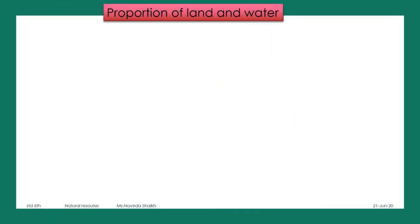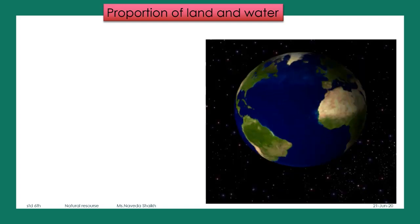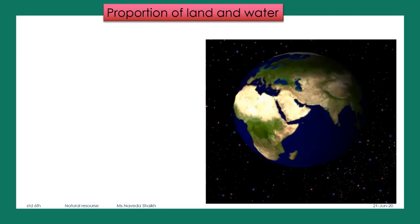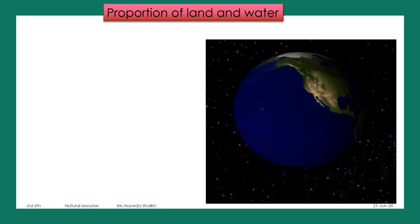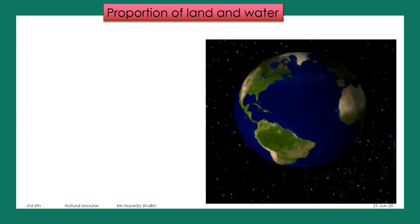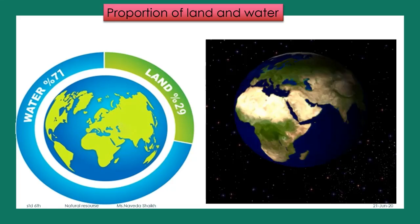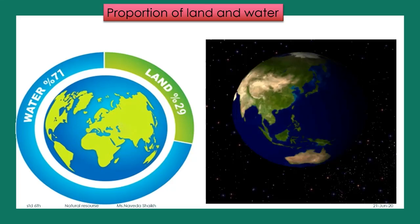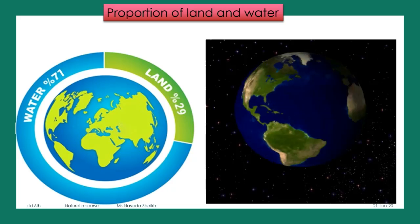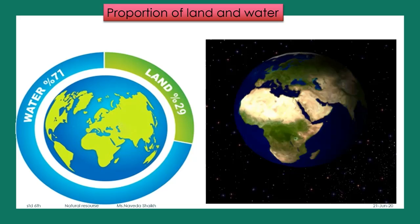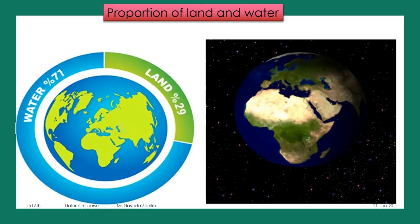Now we need to learn about the proportion of land and water. If you look at our planet earth on a globe, you will see that compared to land, there is more amount of water present — the hydrosphere is more than the lithosphere. Here is a picture explaining how much is land and how much is water. There is 71% water present on earth, and land covers about 29%.